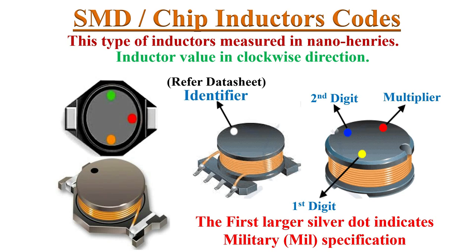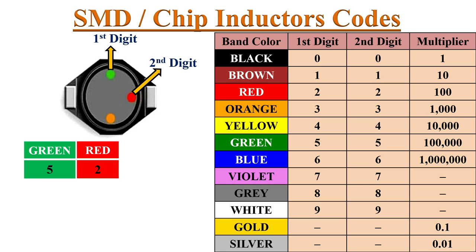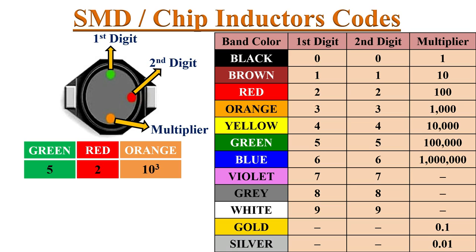In some cases, only a single colored dot is marked, meaning you have to refer to the manufacturer's data sheet for specifications. For example, here the first digit is green — its value is 5. The second digit is red — its value is 2. The third digit is orange, which is the multiplier with a value of 10 to the power of 3. So the inductance value is 52,000 nano-Henrys.